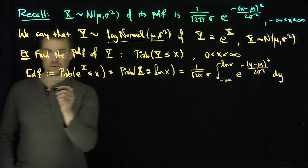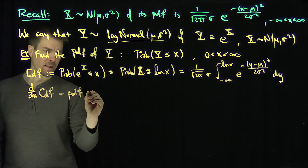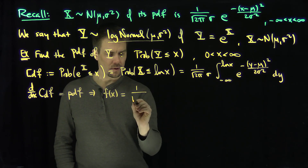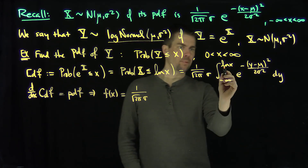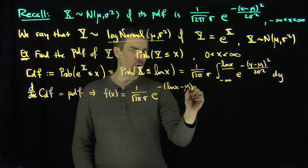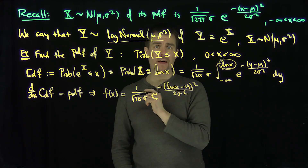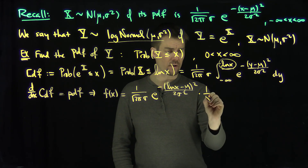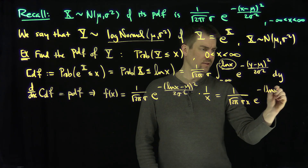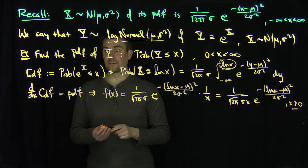Now I take the derivative of this CDF with respect to x to get my PDF. Applying the fundamental theorem of calculus, I plug the upper limit log of x into the integrand and multiply by its derivative 1 over x. So the PDF is 1 over sigma x, times e to the negative natural log of x minus mu, quantity squared, over 2 sigma squared, for x greater than zero. That's the PDF of the log-normal distribution — it has an x in the denominator.